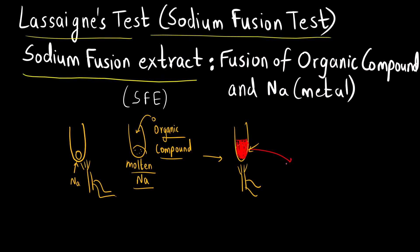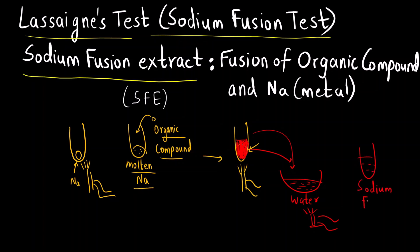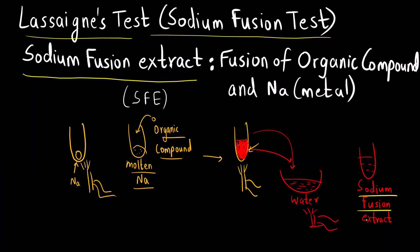Once the test tube is red hot, you plunge it into an evaporating dish containing water so the extracts dissolve in it. You crush it, heat it some more, and what you finally obtain is called the sodium fusion extract. This extract is then used to detect elements like nitrogen, sulfur, and halides by reacting it with specific chemicals.